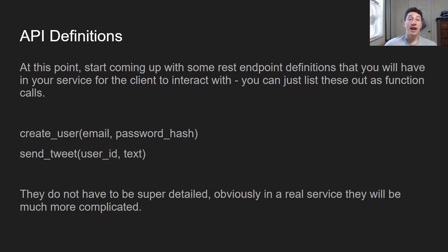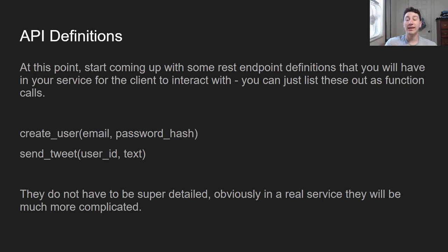Now we want to start talking about API definitions. These don't have to be super formal — don't waste a lot of time here, they're supposed to be basic. The point is you're going to be exposing some services to clients, and you just want to come up with a basic function definition for the type of things your server might take in to perform each operation. Back to the Twitter example: if you're creating a user, you want an email and a hash of the password. If you're sending a tweet, you just want the user ID and the text of the tweet. In reality there's going to be a bunch of other stuff, but for the purposes of an interview, don't waste time — just write out some quick stuff.